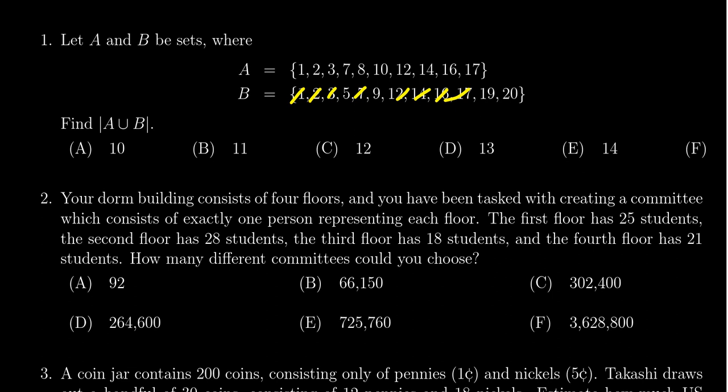So then we can count how many elements are there. If you put those elements together, that gives you A union B. A union B is going to be the set containing 1, 2, 3, 5, 7, 8, 9, 10, 12, 14, 16, 17, 19, and 20.